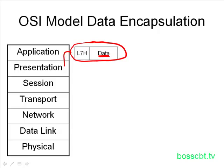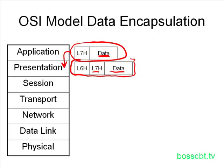The application layer then sends this down to the presentation layer, which does the same thing. It receives the original layer 7 PDU — which has the layer 7 header and the original data — and prepends its own layer 6 header. This entire PDU, since it now has a layer 6 header, can be referred to as the layer 6 PDU. At each layer we have a protocol data unit; the number will change depending on which layer it was created at.